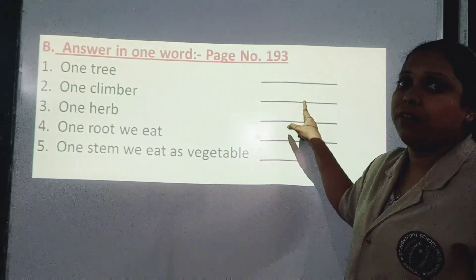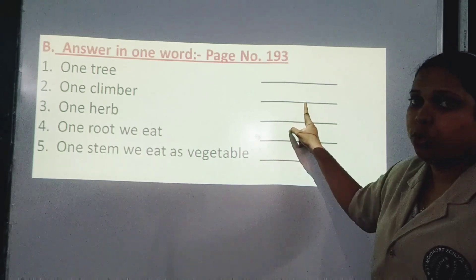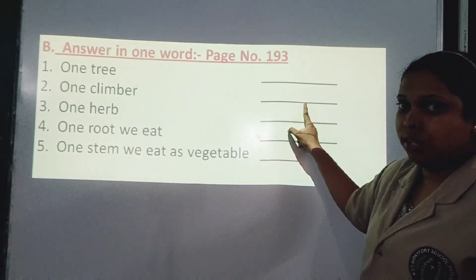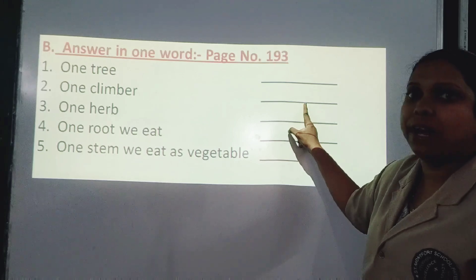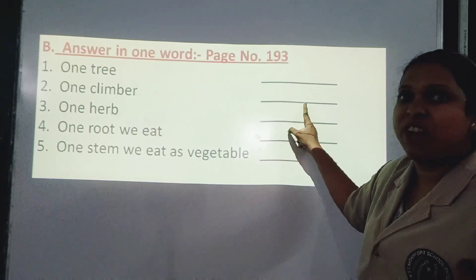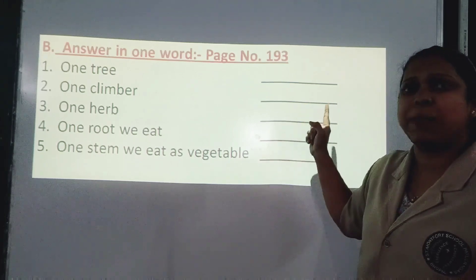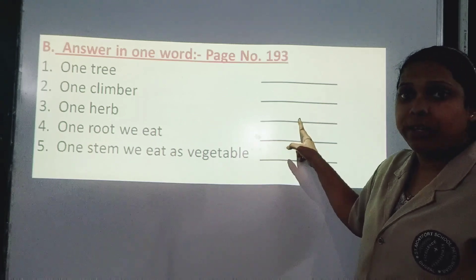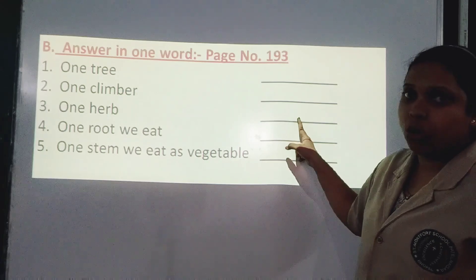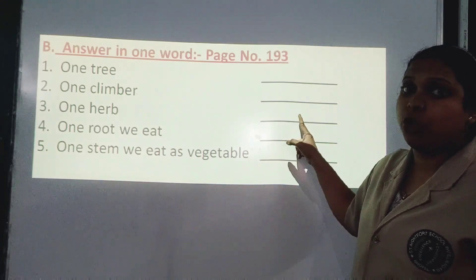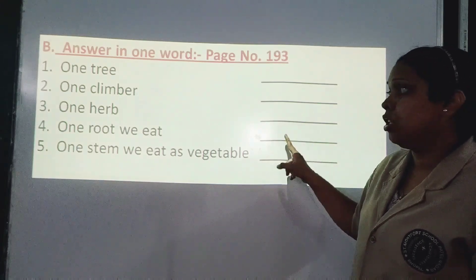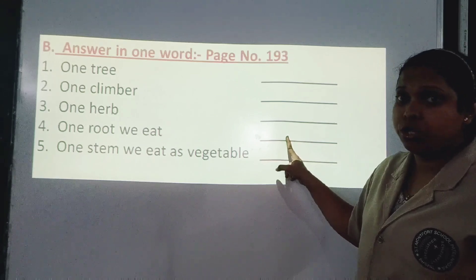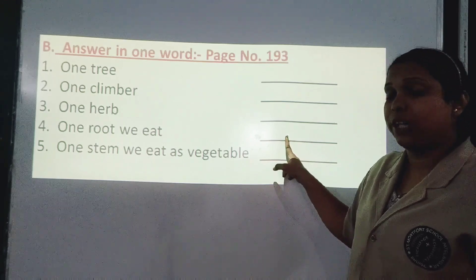For one herb, you can write coriander or mint — whichever spelling you know. For one root we eat, you can write beet root — write whichever root spelling you remember.